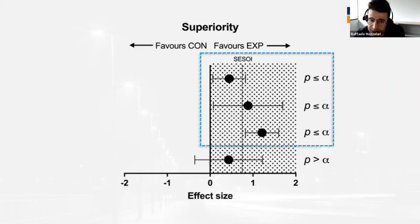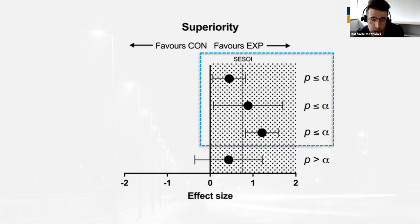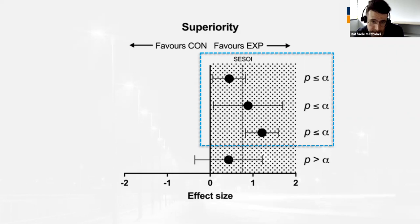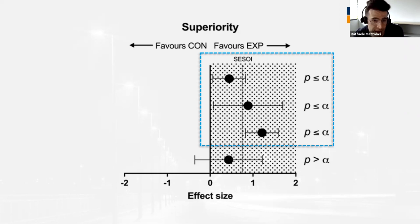Looking at the slides: in the first three cases, the confidence interval built around the effect size — which for interventional studies is mostly based on mean difference — excludes the zero line, where the two interventions would be equal. In these three cases, we observe a P value less than alpha. In the fourth scenario, the confidence interval includes zero and even negative effect sizes. In this case, we cannot conclude that the two interventions are different or that one is superior to the other.